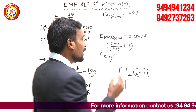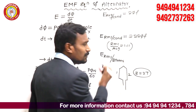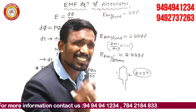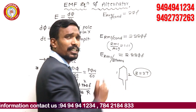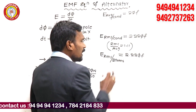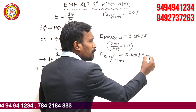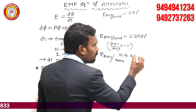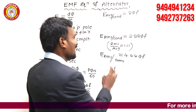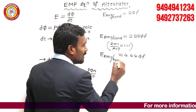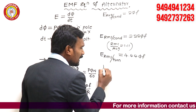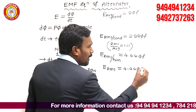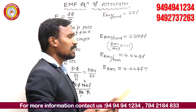E RMS for 2T conductors equals 2 × 2.22Φf. Multiplying by 2, the value becomes 4.44Φf. This is exactly E RMS per turn. If you want total E RMS, then E RMS equals 4.44ΦfT, where T is the total number of turns.